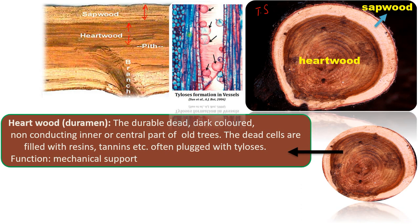Thyloses are parenchyma cells that protrude from xylem vessels or tracheids into the lumen — into the cavity of xylem — thus blocking the water transport. These balloon-like outgrowths of parenchyma cells are often filled with resins and tannins, giving the wood its characteristic properties and making it durable, as these resins and tannins prevent attack by termites, fungus, etc.